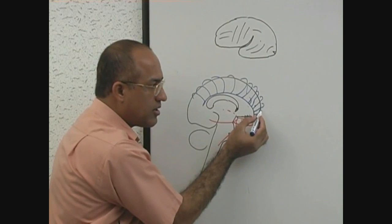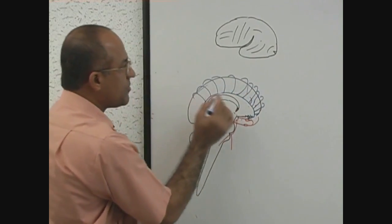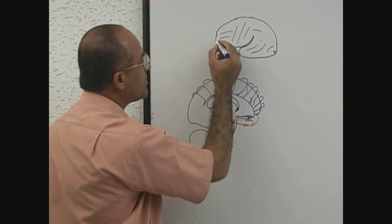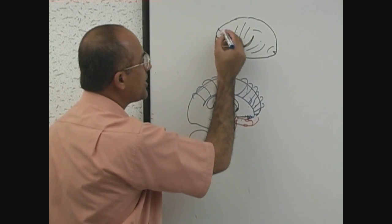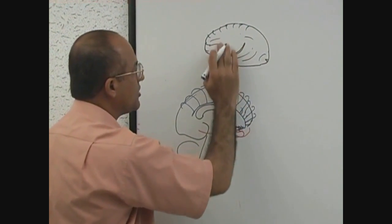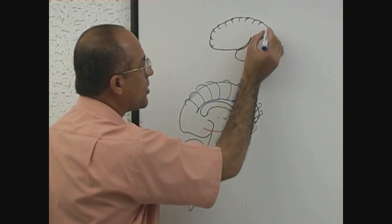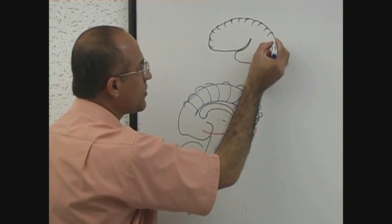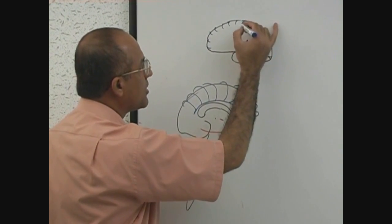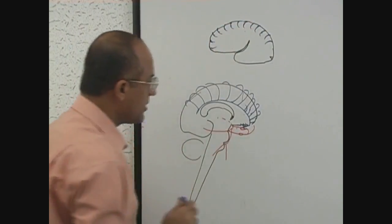So on the medial side of the cerebral hemisphere within the interhemispheric longitudinal fissure, the anterior cerebral artery runs forward, then upward, then backward, giving cortical branches to the medial surface of the frontal and parietal lobes, as well as branches long enough to supply the upper part of the frontal and parietal lobes on the supralateral surface.